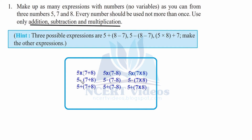Now, the second row, we use 5 minus in all three expressions and then write the column as it is — that is, 7 plus 8 here, 7 minus 8 here, and 7 into 8 here. So, we have done six expressions. Now three are left. Now, we will use 5 plus in all the three expressions and inside remains the same.